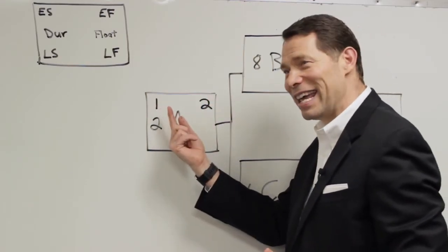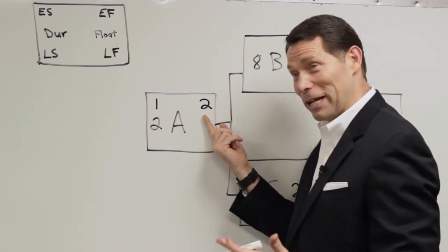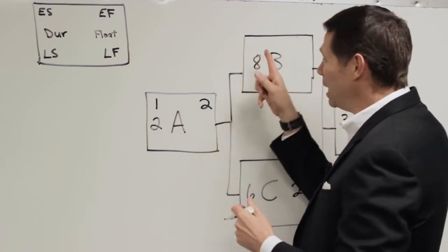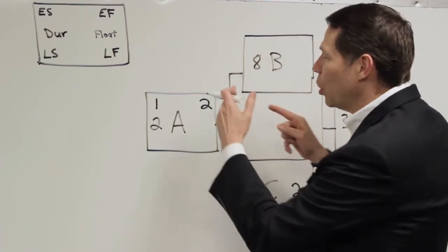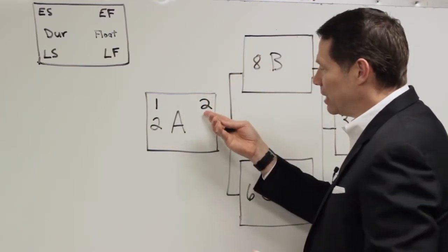What does that mean? My early start's Monday and I'm going to end it at the end of day Tuesday. If this ends at the end of day Tuesday, when can B and C start? I think it's pretty obvious. Wednesday. When you go over the divide, you're just going to add one to it.